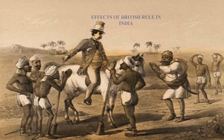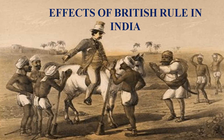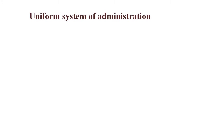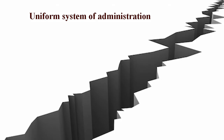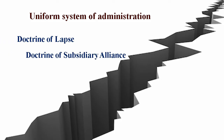Effects of British Rule in India. Uniform System of Administration: The British, by their divide and rule policy, Doctrine of Lapse, and Doctrine of Subsidiary Alliance, were able to effectively exercise their control over India.